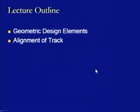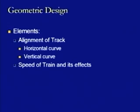From now onward, whatever material we will be discussing is related to the geometric design of railway tracks. In the case of geometric design, the very first thing we are going to discuss is the alignment of track. Geometric design is defined as the design of all physical features which have been provided so as to have a smooth operation of the system.